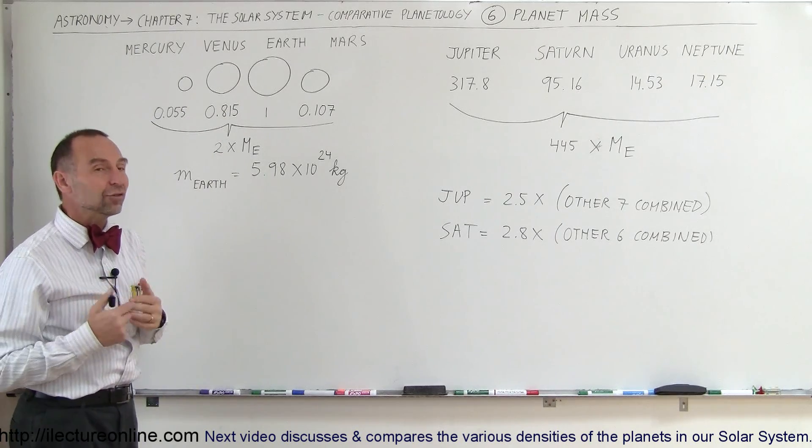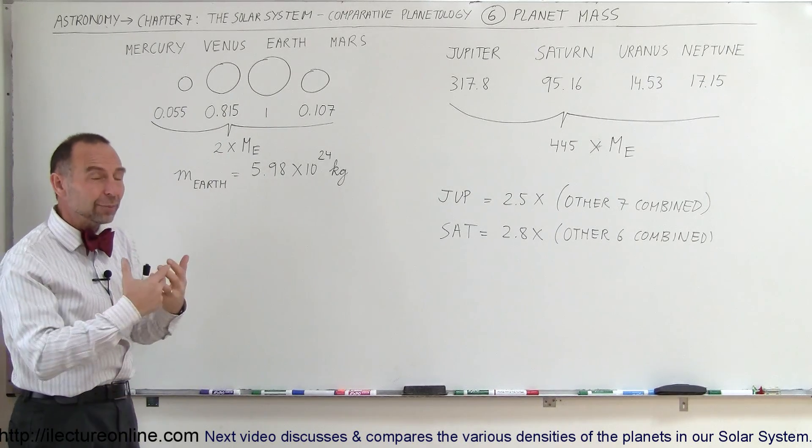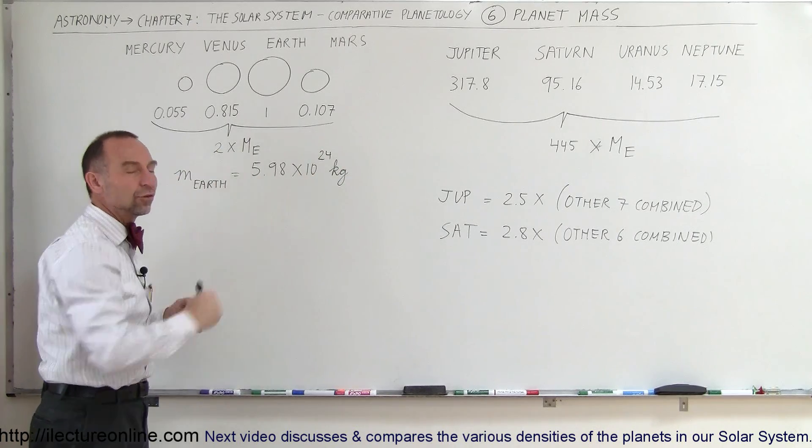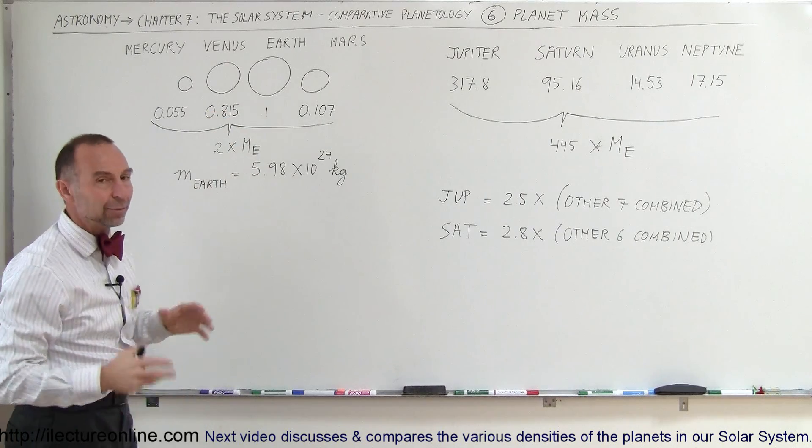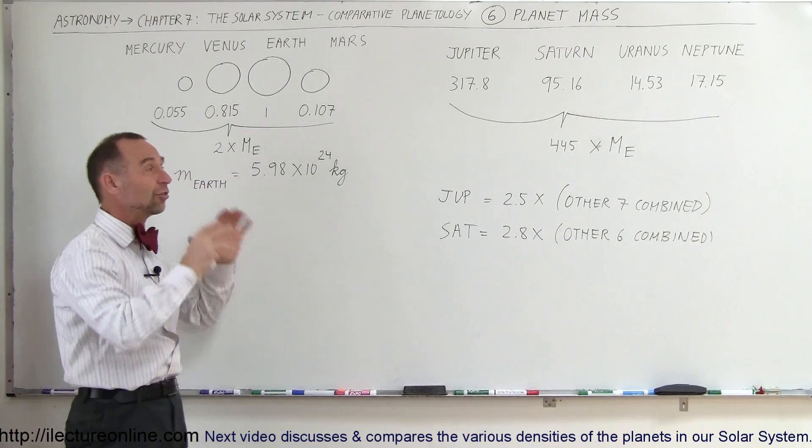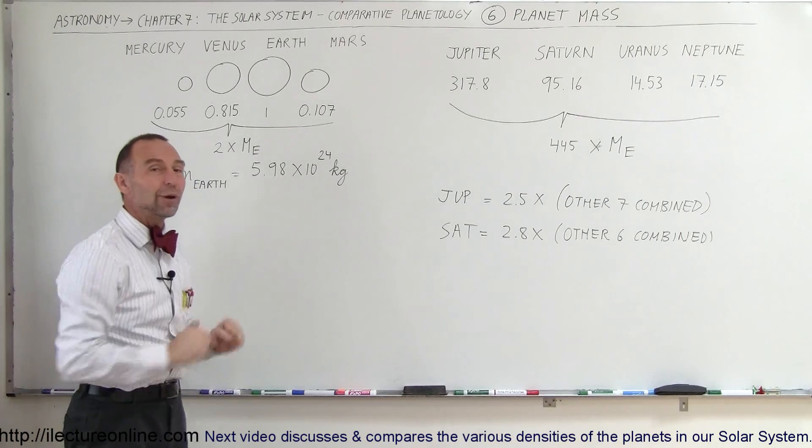Only the terrestrial planets that have the heavy materials were left in the inner solar system. We'll learn more about why that is so. That had to do with how the Sun developed and how the solar wind blew all the light elements, the gas elements, way out into the solar system, leaving behind the heavy elements to coalesce into the terrestrial planets. The mass distribution is such that most of the mass is far away from the Sun.